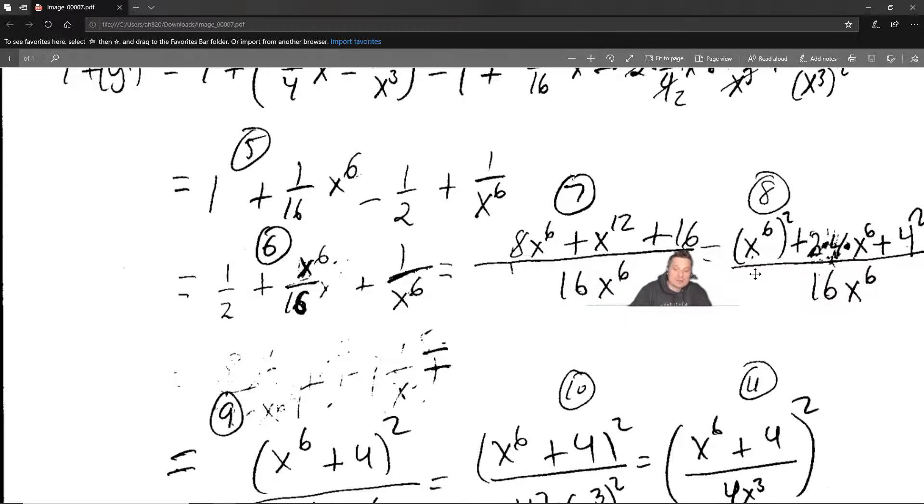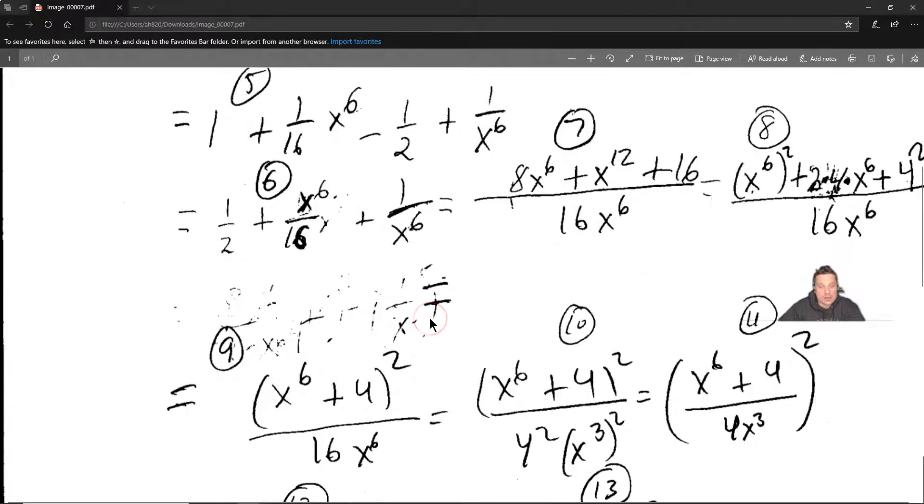What is key, though, is to make the following observation. You can rewrite the x to the 12th as the first term at step 8 as x to the 6th to the 2nd. You can rewrite the middle term of 8x to the 6th as 2 times 4 because 2 times 4 is 8 and then x to the 6th. And that 16 at the end can be written as 4 squared. Why would I want to see it this way? Because then it's basically like a perfect square trinomial. You see, that's the key. That could really trip you up.